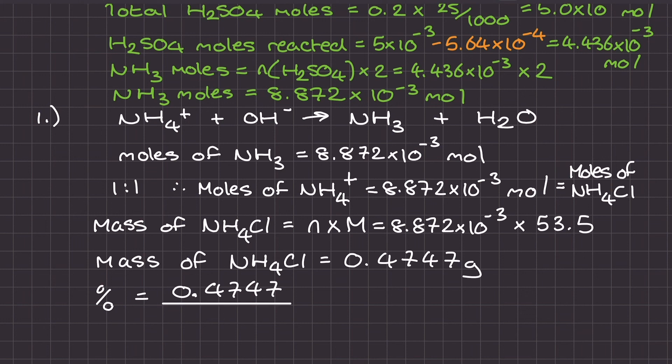So for the final stage of this, I need to take this mass value and divide it by the mass value of the impure sample and then multiply by 100 to calculate the percentage by mass of ammonium chloride in the impure sample. That value comes out as 94.9%. And we're done!